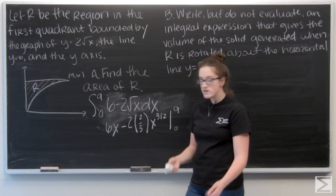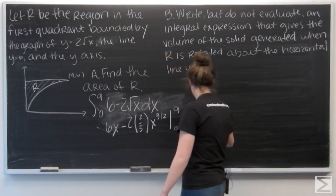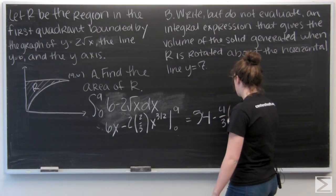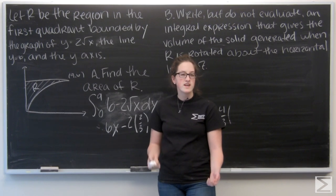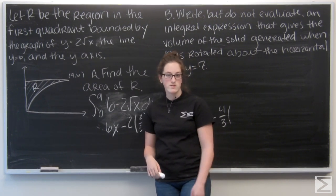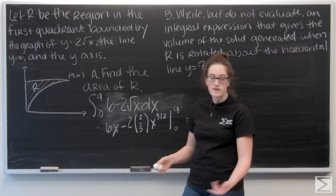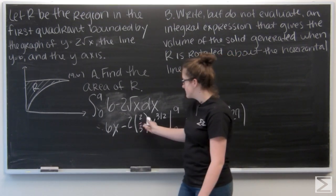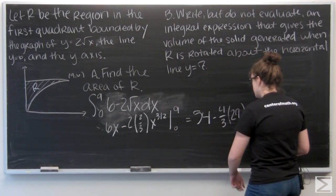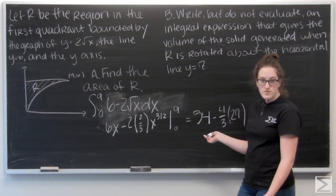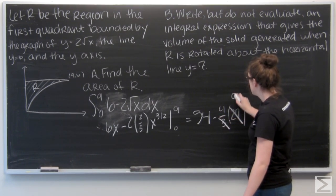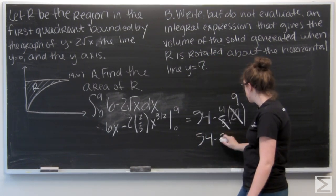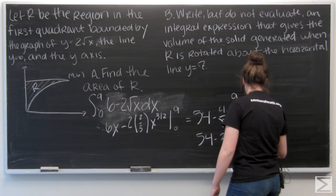Let's go ahead and plug in 9 first. 6 times 9 is 54. I'm going to go ahead and rewrite that as 4 thirds. And then I have 9 to the 3 halves. So remember that's like taking the square root of 9 and then taking that to the third power. The square root of 9 is 3. 3 to the third is 27. And then when I plug in 0, I'm just going to get 0 minus 0. So let's just combine these. 27 is a multiple of 3. That leaves me 9. So I have 54 minus 36, which is 18.